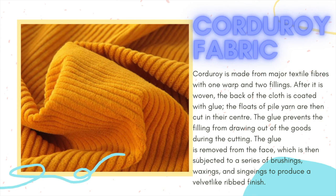Corduroy fabric. Corduroy is made from major textile fibers with one warp and two fillings. After it is woven, the back of the cloth is coated with glue. The floats of pile yarn are then cut in their center. The glue prevents the fillings from drawing out of the goods during cutting. The glue is removed from the face, which is then subjected to a series of brushing, waxing, and singeing to produce a velvet-like rib finish.